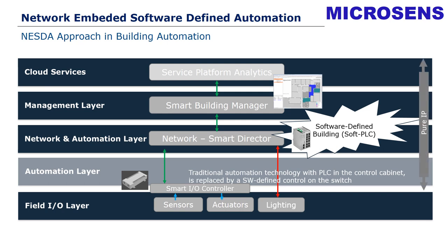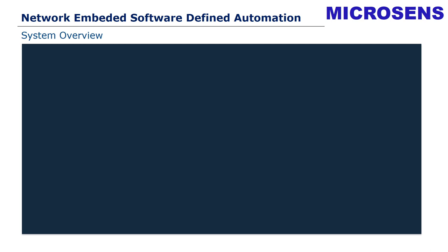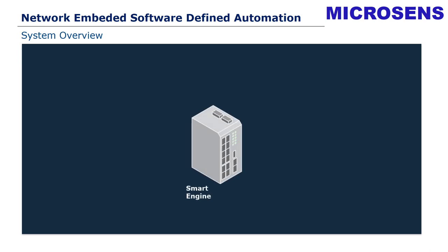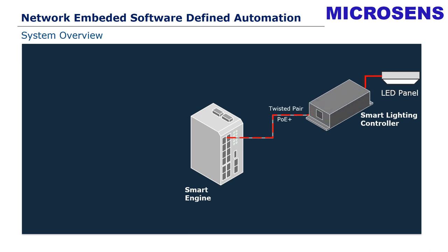So how does it look? Let's look at how the system is composed. We start with our PLM — we use the PLM in this example as our smart engine. On the smart engine, we have connected an LED panel over a smart lighting controller. The smart lighting controller is connected via a PoE connection over a patch cable directly to the switch. We run the lighting over PoE in this case, and the functionality — power supply and data — are provided over the switch.